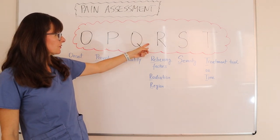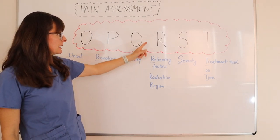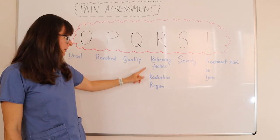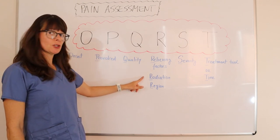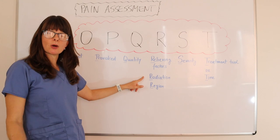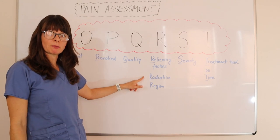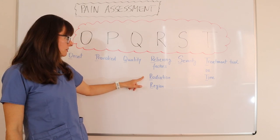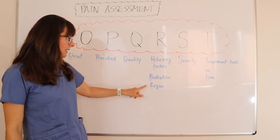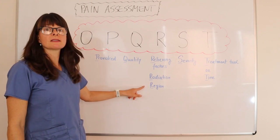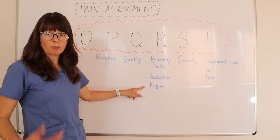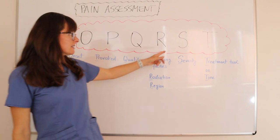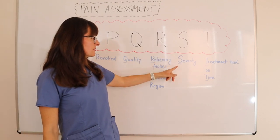R can have three different meanings: relieving factors — what makes the pain better; radiation — whether the pain is radiating to other parts of the body from the original site; and region — what is the original part, or where is the pain located.